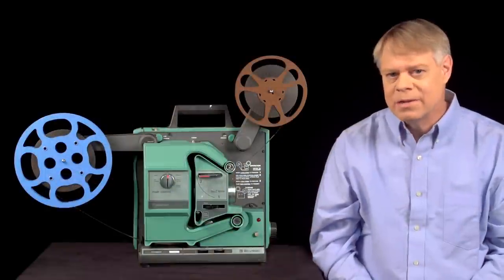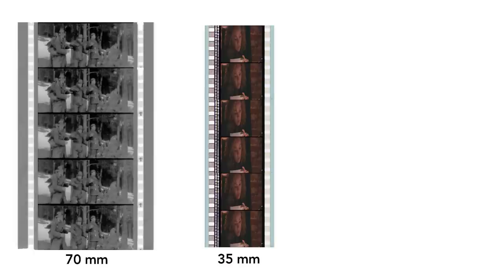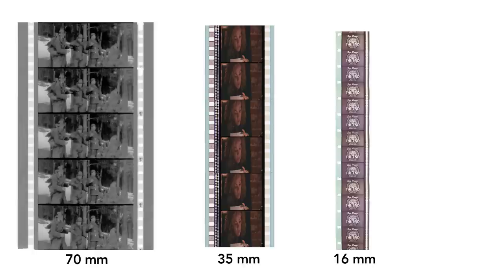Film came in many sizes, from the giant 70mm popular in the 1960s for epics like Lawrence of Arabia, to 35mm used for most feature films, to 16mm for schools, and even 8mm used by home enthusiasts.